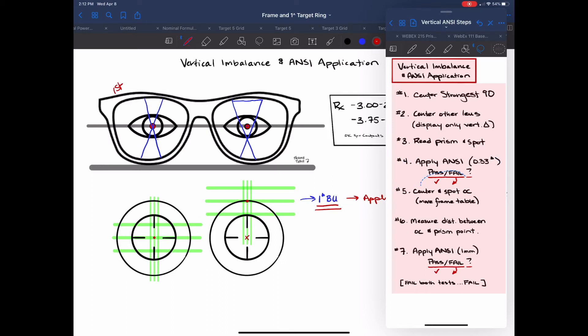If you look at the instructions here if it passes we keep moving forward no problems. But if it fails we're going to have to continue to apply the ANSI tolerances to see if it passes the next tolerance which is one millimeter. So how do we apply that?